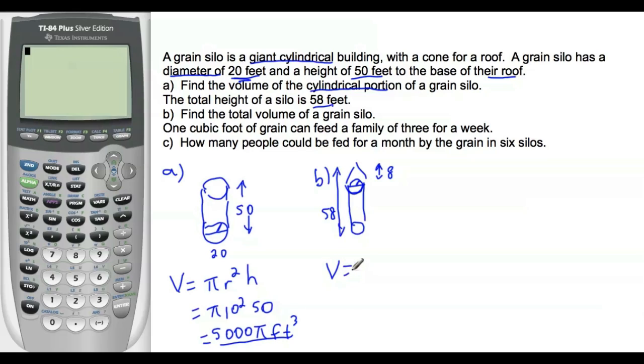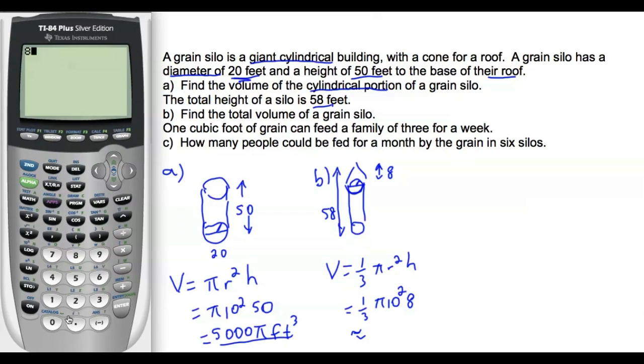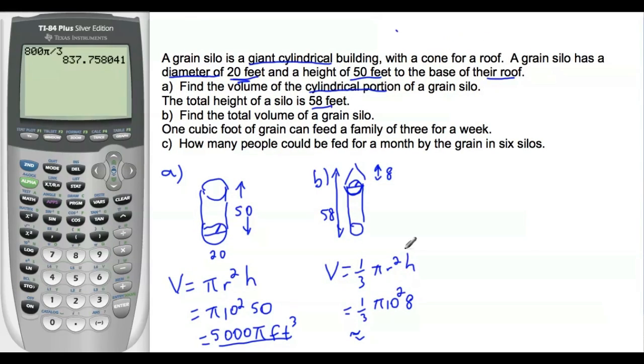The volume of a cone is 1 third pi r squared h. Again, 1 third pi 10 squared, and then the height is 8. This one, I'm going to round to three significant figures. So, 800 pi over 3, 800 pi over 3 gives me 837.8 rounded to three significant figures, 838. The 7 makes it go up to 8. And that is feet cubed.